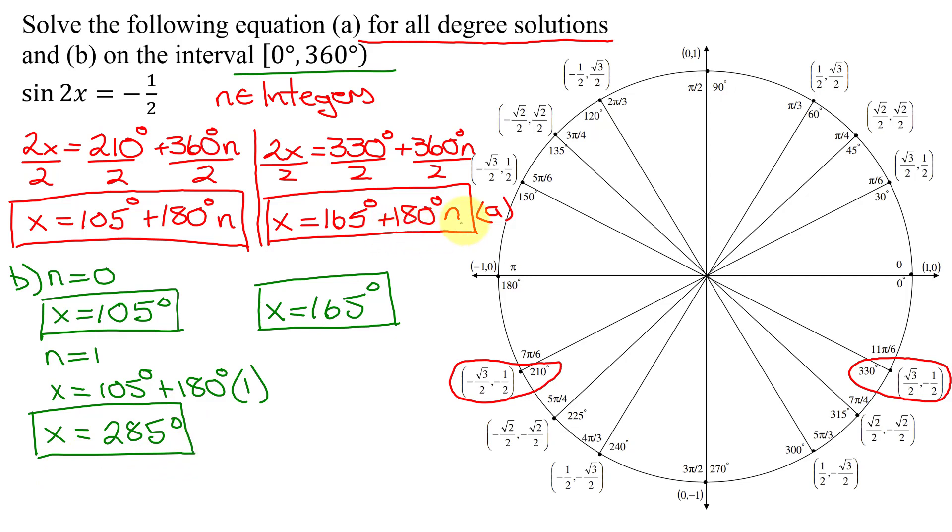Next, I have to plug in n equals 1 to this equation. So I'm going to get x equals 165 degrees, plus, I'm running out of room, sorry about that, 180 degrees when n is 1 times 1. So x equals 165 degrees plus 180 degrees is 345 degrees.